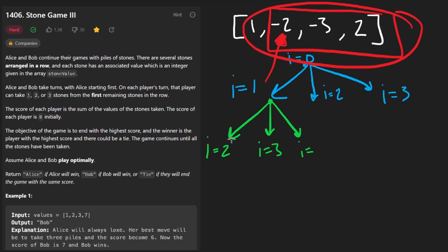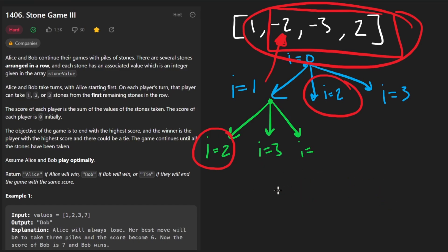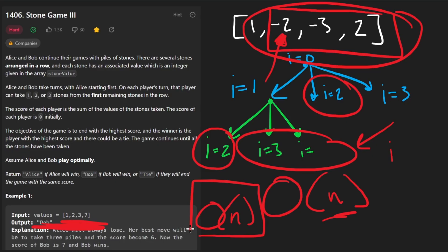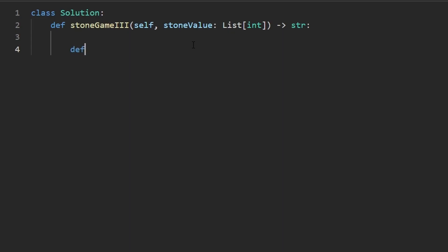There are repeating sub-problems, so we can apply memoization. With a single variable i, the overall time and space complexity is O(n), where n is the length of the input array. Now let's code it up.